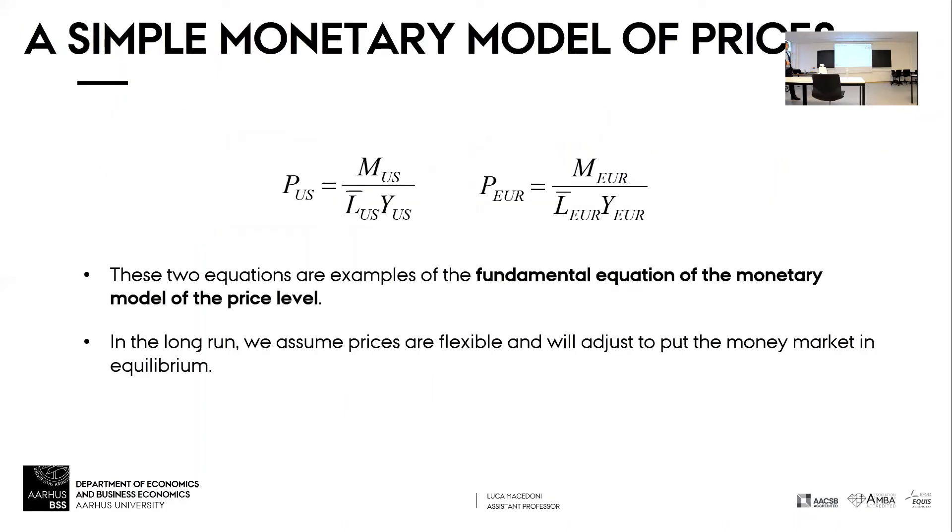we know that the price level in the US is the ratio between the money supply in the US and the US real GDP. And we also have this constant L bar with no percent.